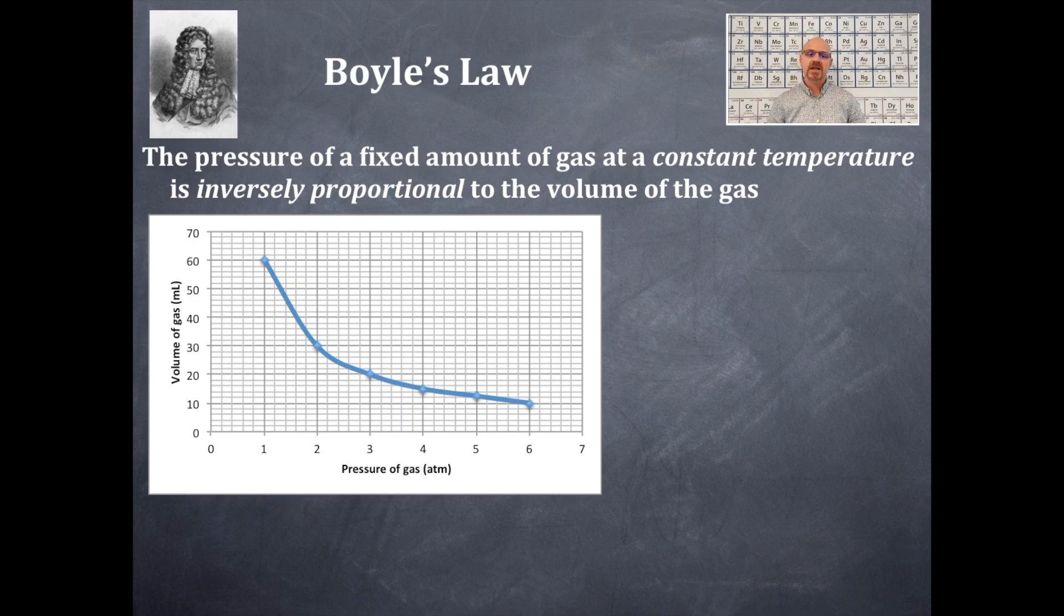Boyle's Law is the pressure of a fixed amount of gas at constant temperature is inversely proportional to the volume of that gas. So I want you to take a look at that graph and look at the numbers on the y and x axis. You got volume on the y axis, on the x axis you got pressure. The volume is in milliliters, the pressure is in atmospheres.